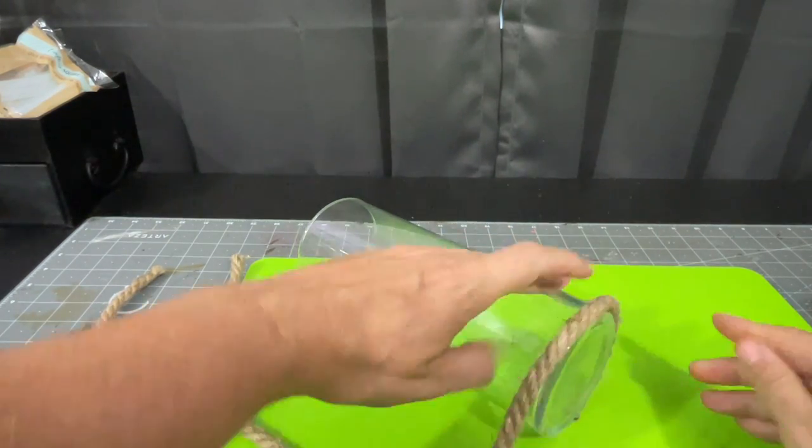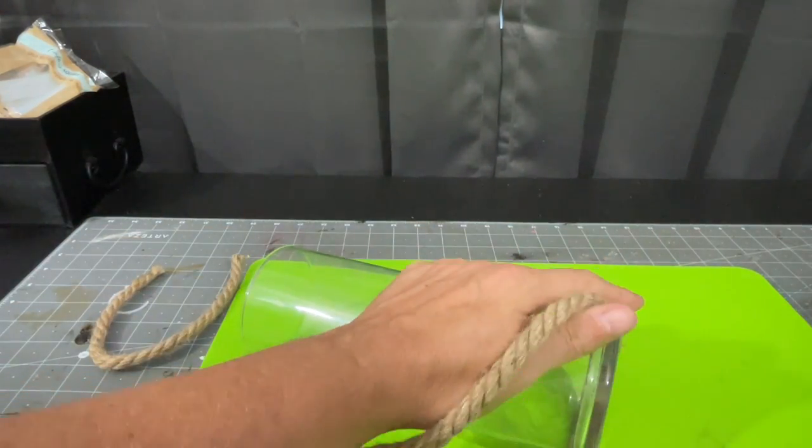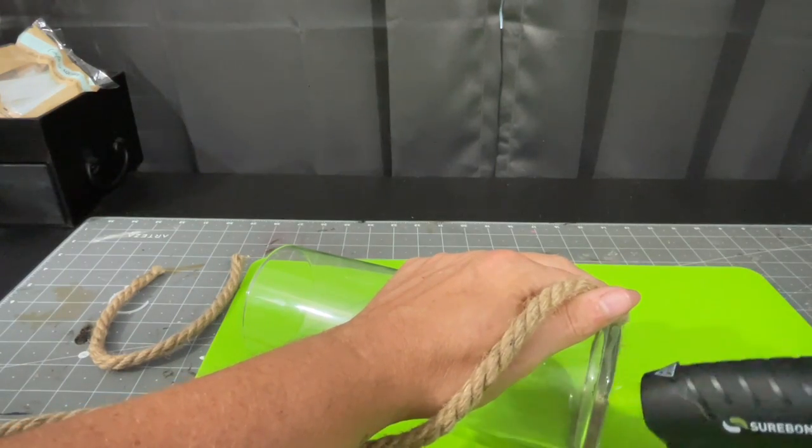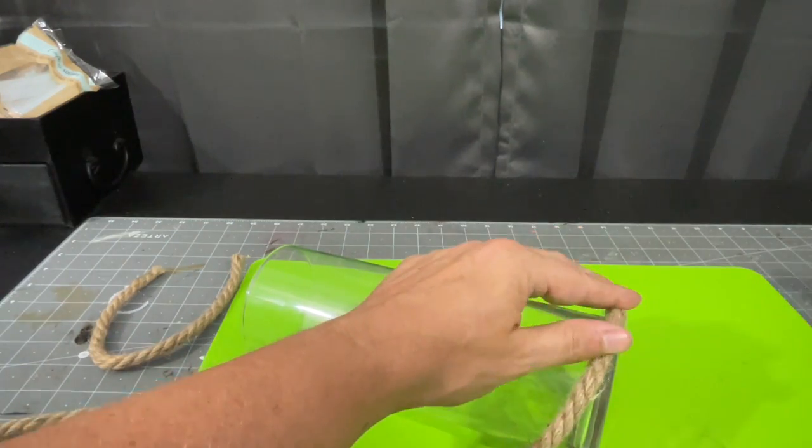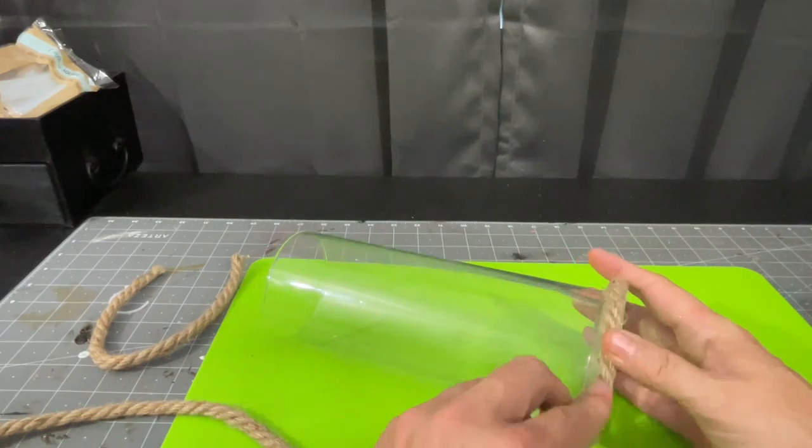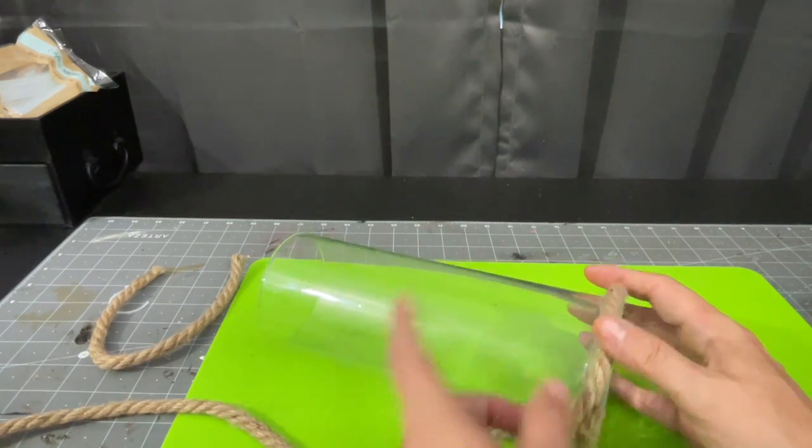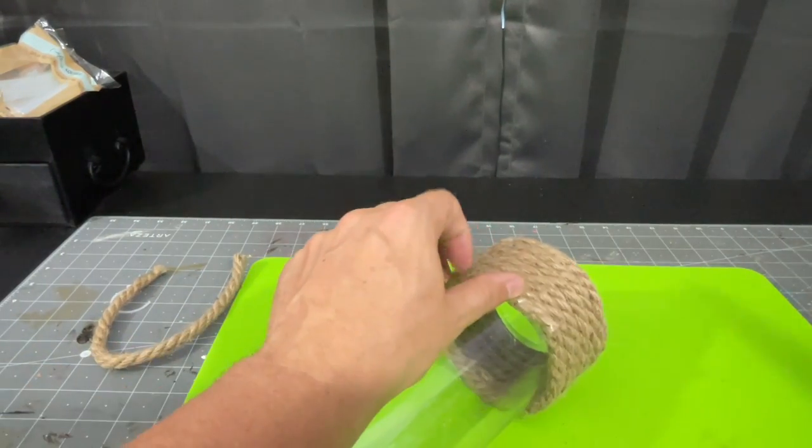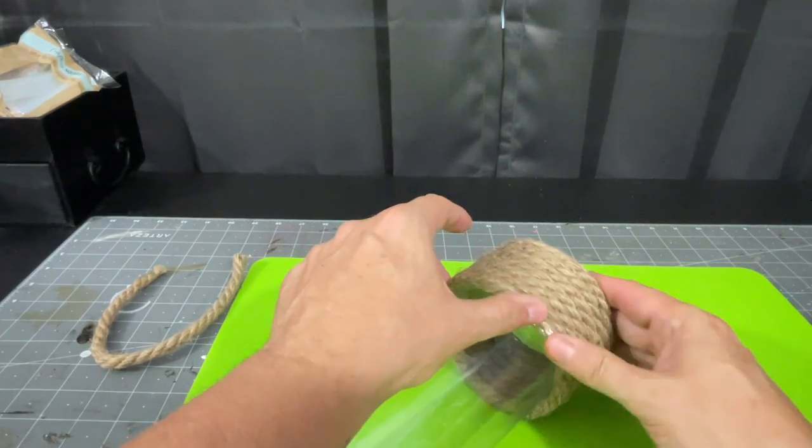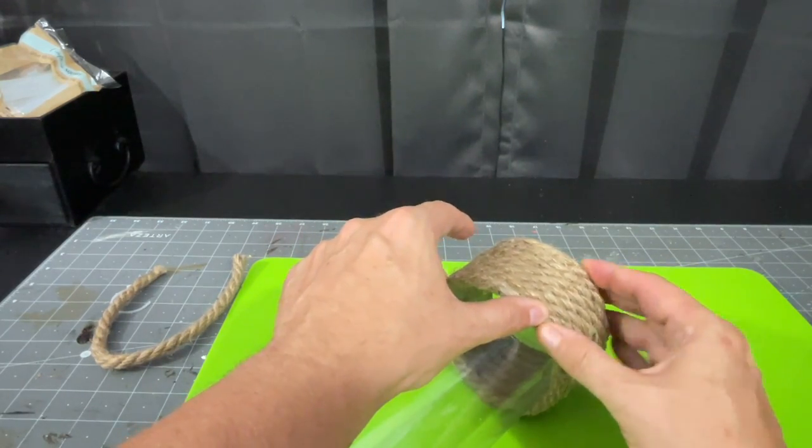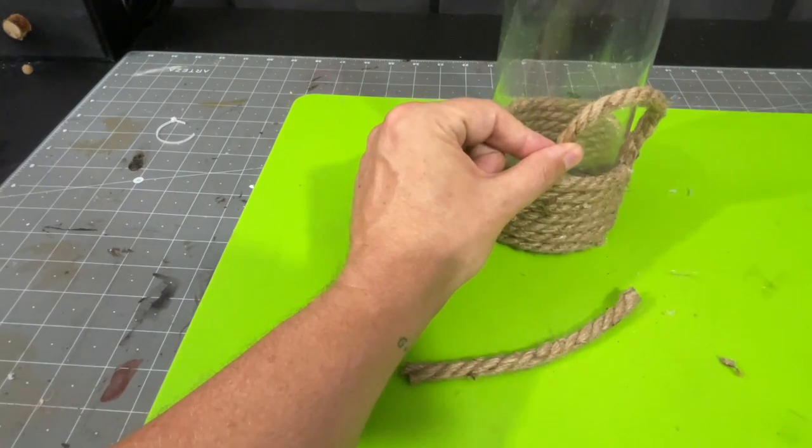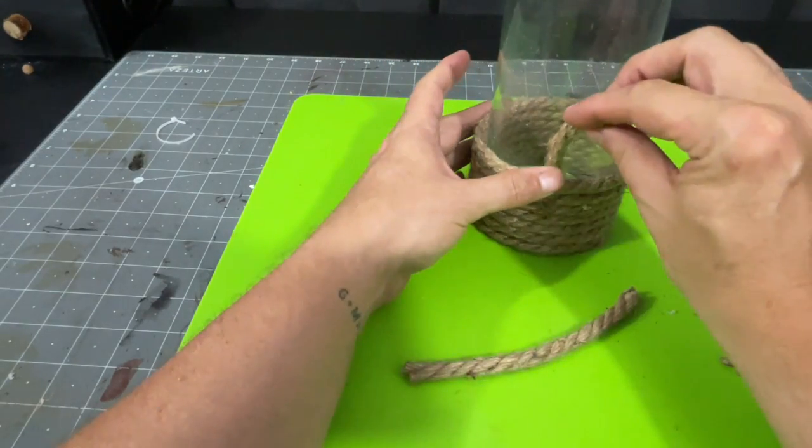Then as I work my way up the bottle you can kind of be a little bit, you know, you just don't have to use as much glue, how about that. And then once you're out of rope, in this case I use the eight foot bundle, now you're going to take that piece of rope that you reserved.